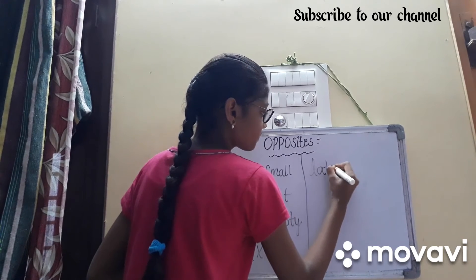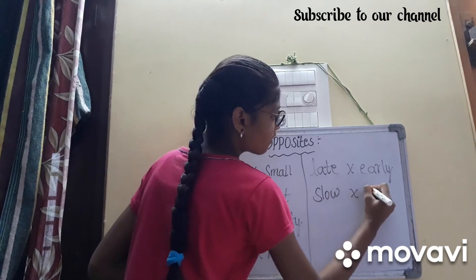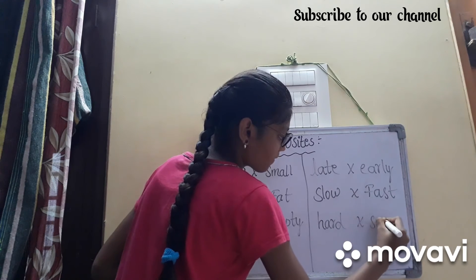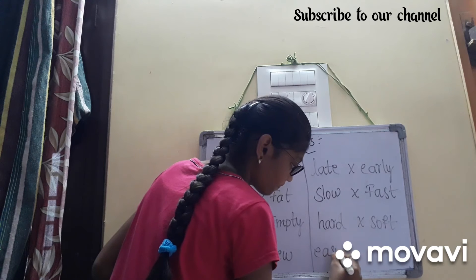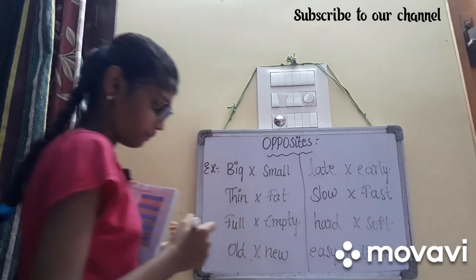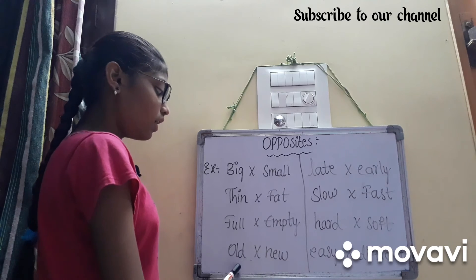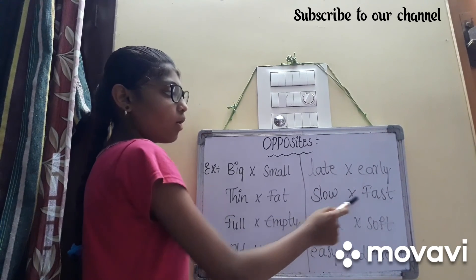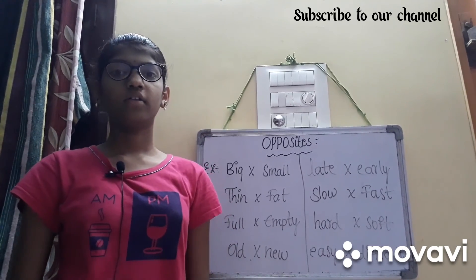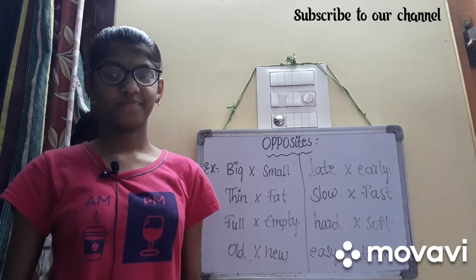Late — Early. Slow — Fast. Hard — Soft. Easy — Difficult. These are all opposites.